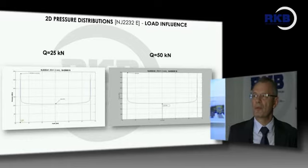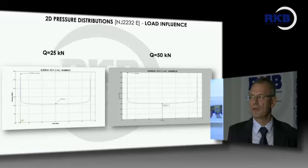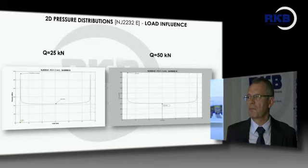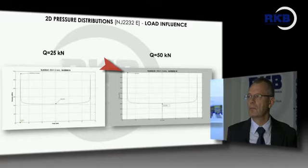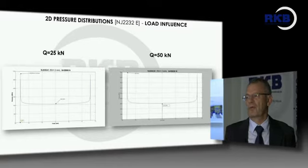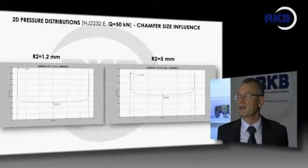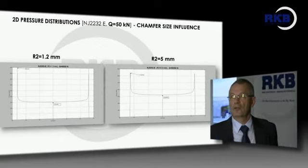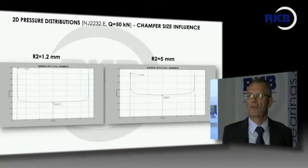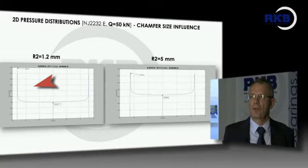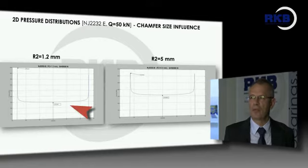Regarding the influence of load: the load has a strong influence on the pressure increase at the end, along with the natural increase of pressure in the median zone. Regarding the influence of chamfer size: the chamfer is usually 1.2 in this design, with a pressure increase at the end but a quite uniform distribution along the generatrix, except at the end zones.